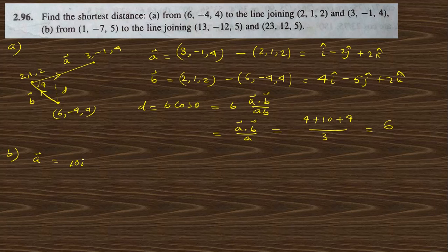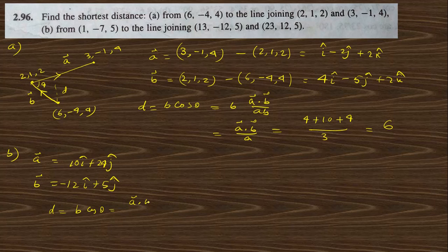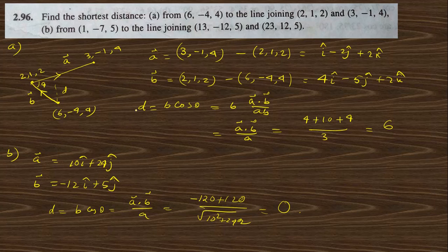Similarly, using vector v: a vector becomes 10i + 24j and b vector becomes −12i + 5j. The distance b·cos θ = (a dot b)/|a| = (−20 + 120)/√(100 + 576) = 0. This means this point lies on the line joining the two given points.